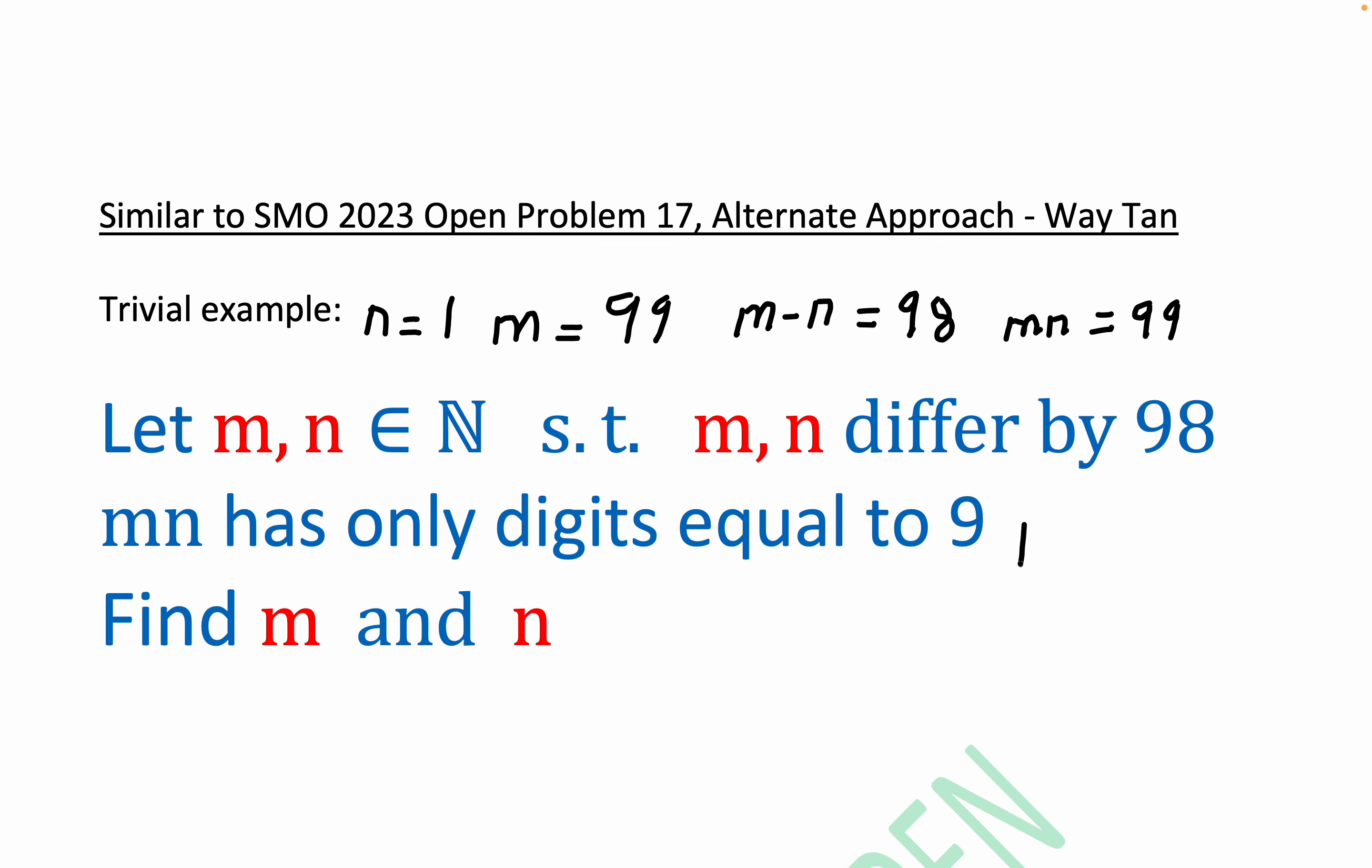Notice that 10 raised to the first minus 1 is certainly equal to 9. And then 10 squared minus 1 is 99.